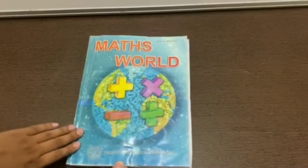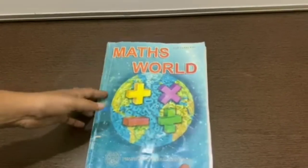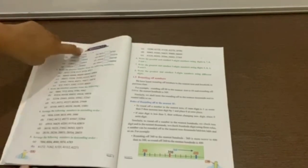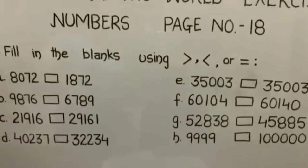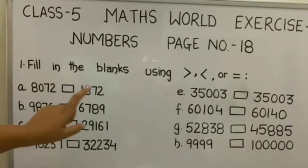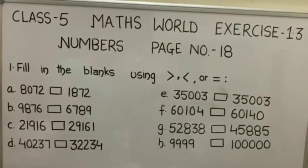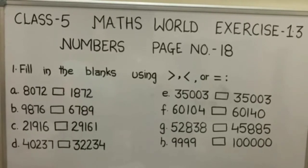So I hope you have understood how to compare 5-digit numbers. Now you will solve question number 1 from the mathematics book given on page number 18, exercise 1.3. Have a look at the board — the question says fill in the blanks using greater than, smaller than, or equals to sign. Solve this question in your notebooks. Thank you.